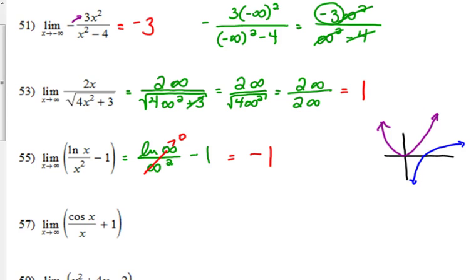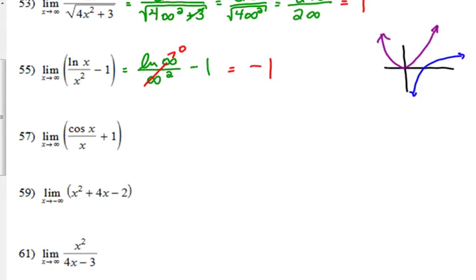Let's look at a trick function. The limit as we approach infinity of cosine of x over x plus one. We're going to plug it in: cosine of infinity over infinity plus one. Cosine repeats over and over, bouncing between one and negative one. We're dividing that by infinity, which is going to be essentially zero, because you're dividing something between negative one and one by infinity — that gives you a super small number. So you get zero plus one, which is just one.